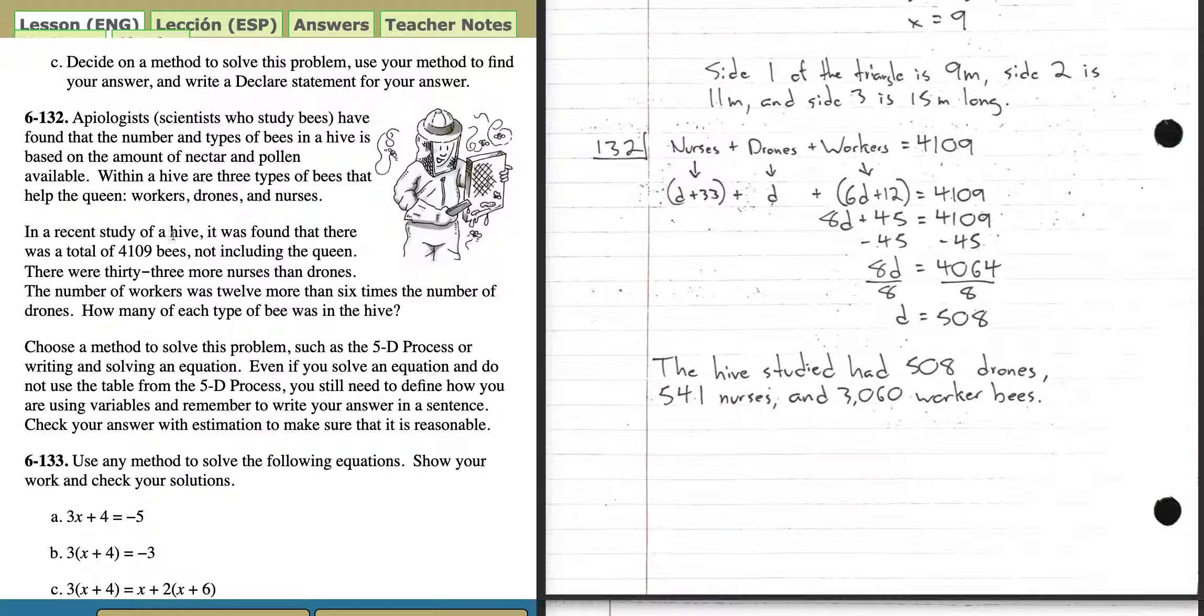It says there were 33 more nurses than drones. The number of workers was 12 more than six times the number of drones. They're comparing both of them to drones. So I wrote: nurses plus drones plus workers equals 4,109. I said the drones is going to be D. The nurses would be however many there are of drones plus 33. Then the workers is a little bit trickier. The number of workers was 12 more than six times the number of drones. So you have to take the number of drones, multiply that by 6, and then add 12. That's how many workers there are.